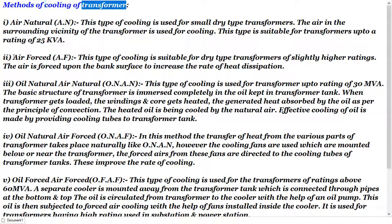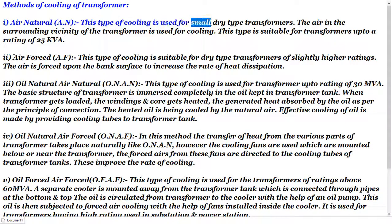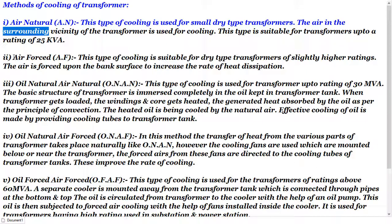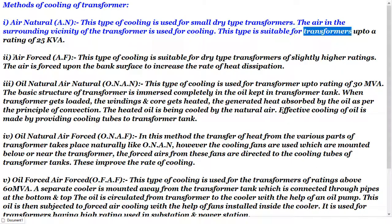Method of cooling of transformer. 1. Air Natural (AN): This type of cooling is used for small dry type transformers. The air in the surrounding vicinity of the transformer is used for cooling. This type is suitable for transformers up to a rating of 25 kVA.